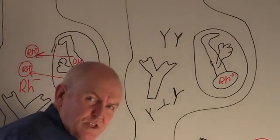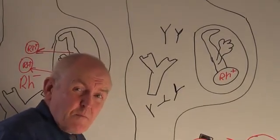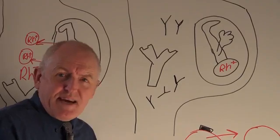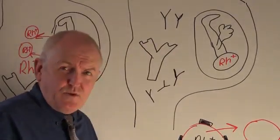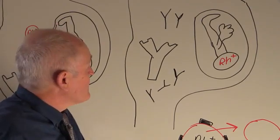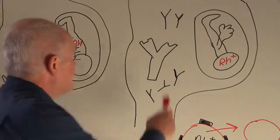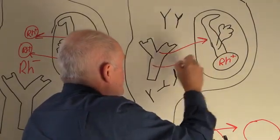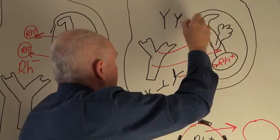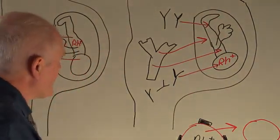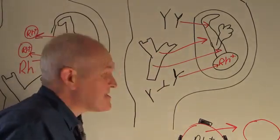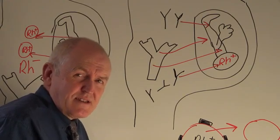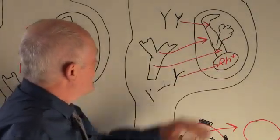The problem is that transplacental migration of antibodies does occur, and in fact it's essential that it does occur, because when the baby is born we want it to have passive immunity from the mother's antibodies to bacterial and viral diseases. But the downside when we have the rhesus factor antibodies is that they can migrate into the baby's circulation and start to agglutinate and hemolyse the fetal red cells. So the baby will develop hemolysis.